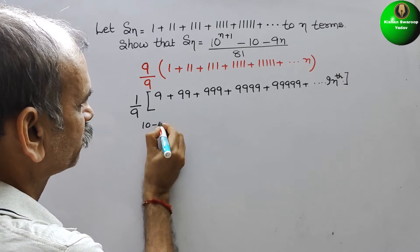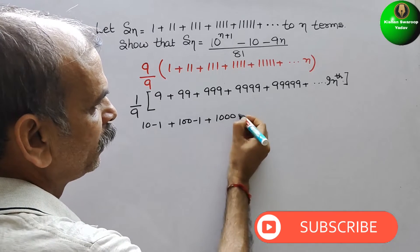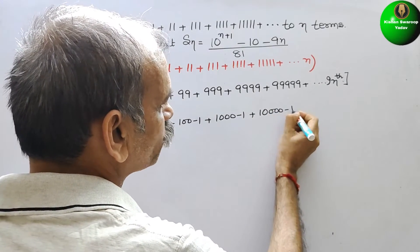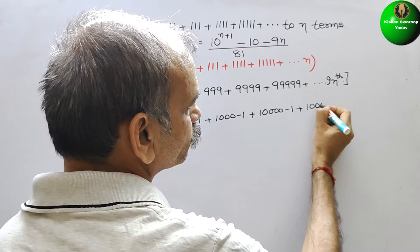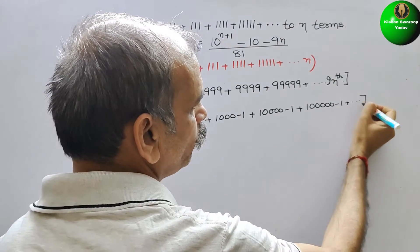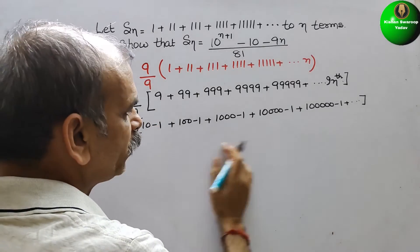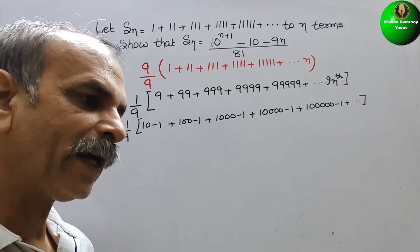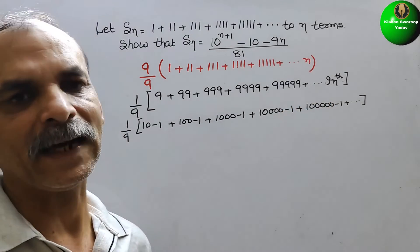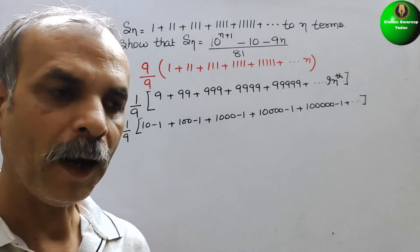So we rewrite the numerator as: (10 minus 1) plus (100 minus 1) plus (1000 minus 1) plus (10000 minus 1) and so on up to n terms, all divided by 9. We now have two separate sequences: the first is 10, 100, 1000, 10000 and so on, and the second is minus 1, minus 1, minus 1, minus 1, up to n terms.